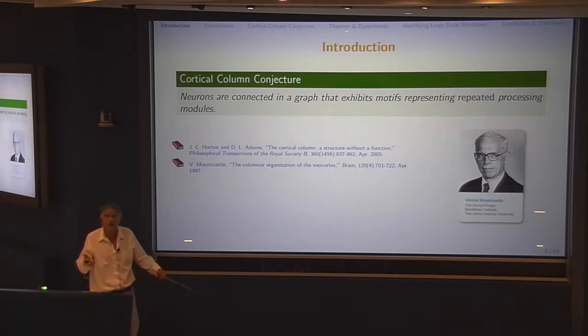The hypothesis is about a graph. It's not dynamic, it's not functional. Obviously, the repeated processing modules is a functional thing, but this conjecture is purely structural. The graph that we're talking about has vertices and edges. The vertices are neurons, and the edges, literally, I mean soma, axon, synapse, dendrite, other neuron soma. So I mean the actual structural wiring of the cortex.